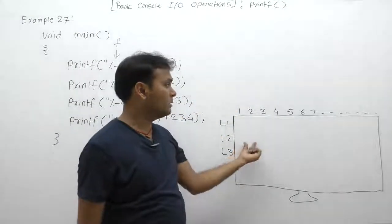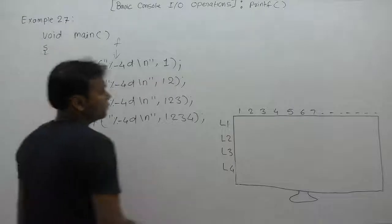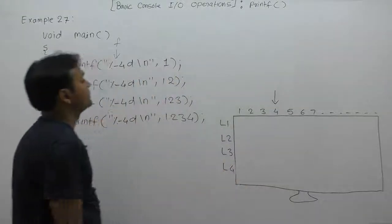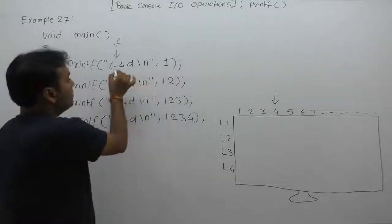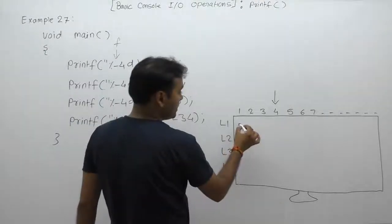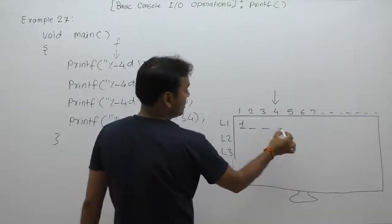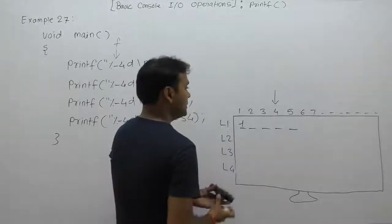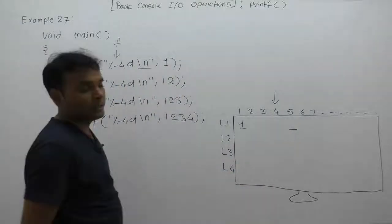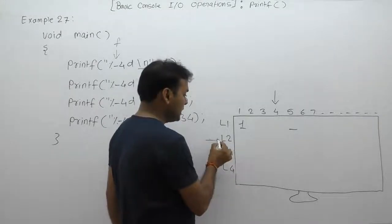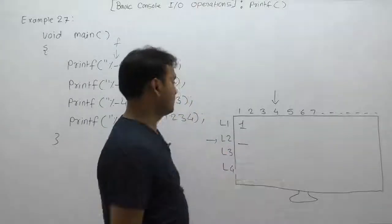According to minus, the number is left-justified, so spaces will be transferred to the right position. The total width is four. The value is displayed from the left because of the minus symbol, but after the value, spaces are filled on the right. The cursor will be on the fifth position, and according to slash-n, the cursor transfers to the beginning of the second line.